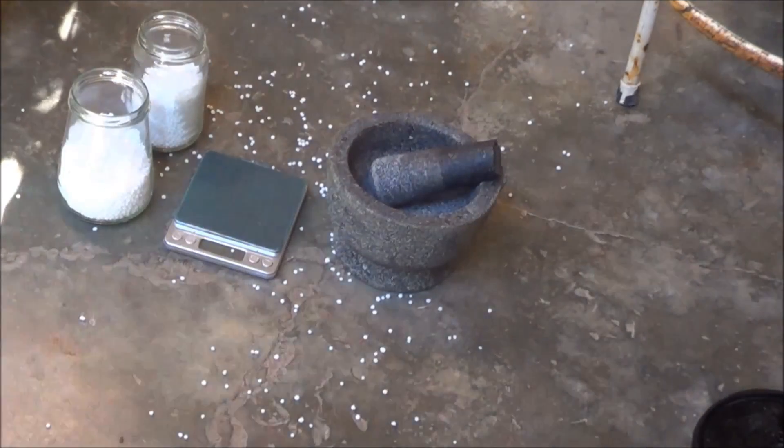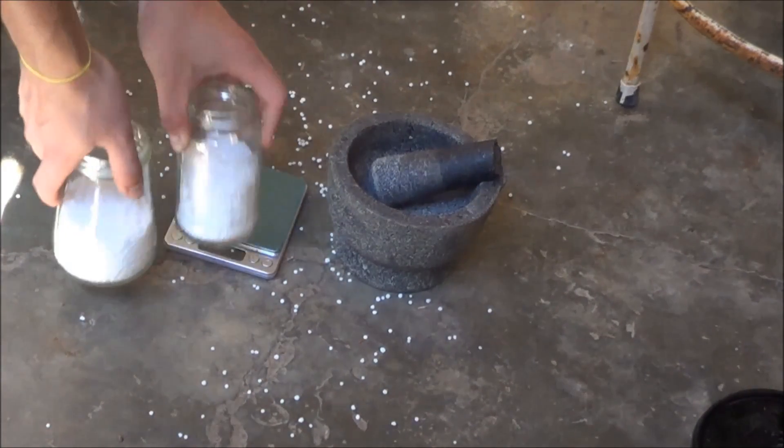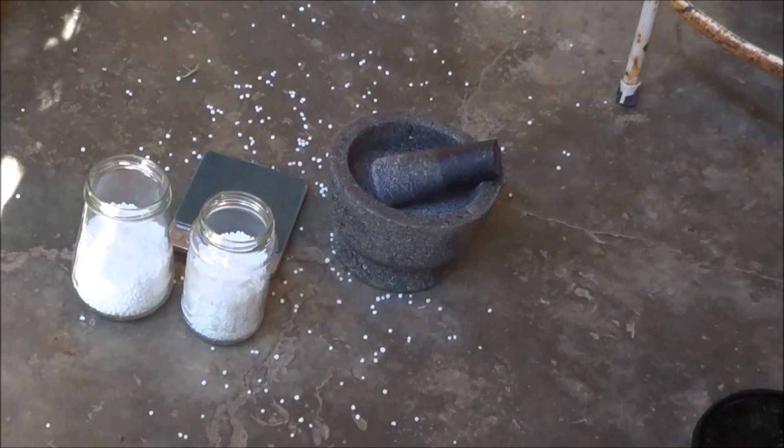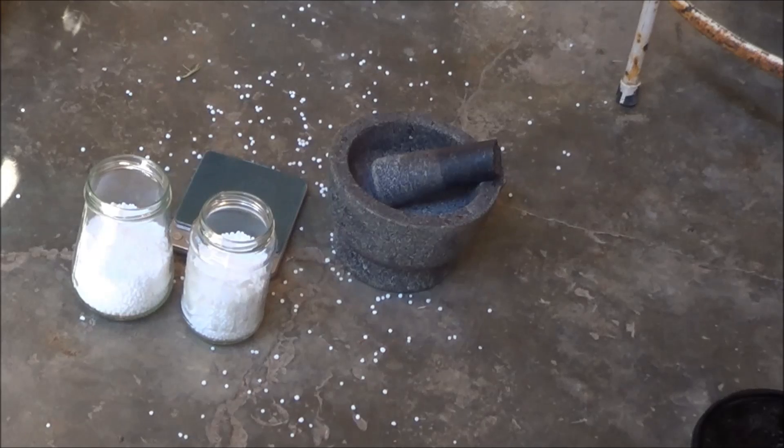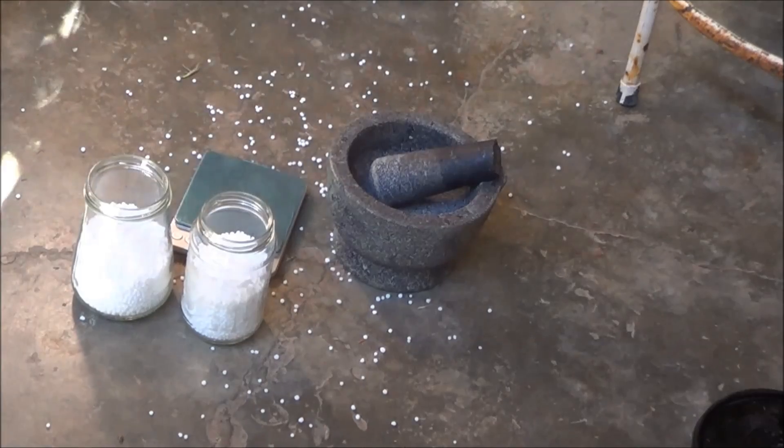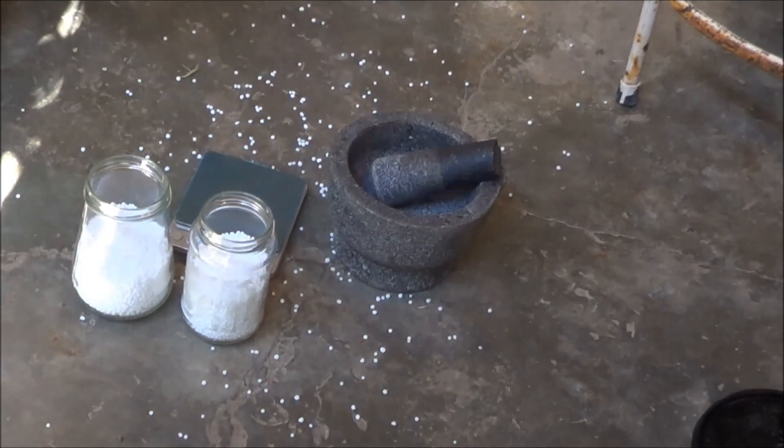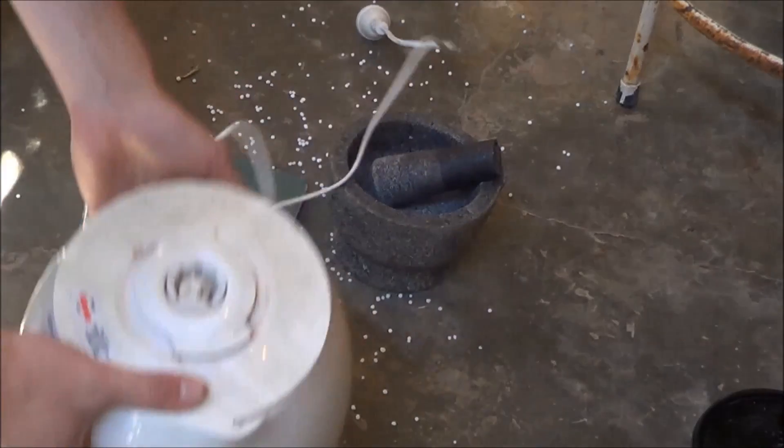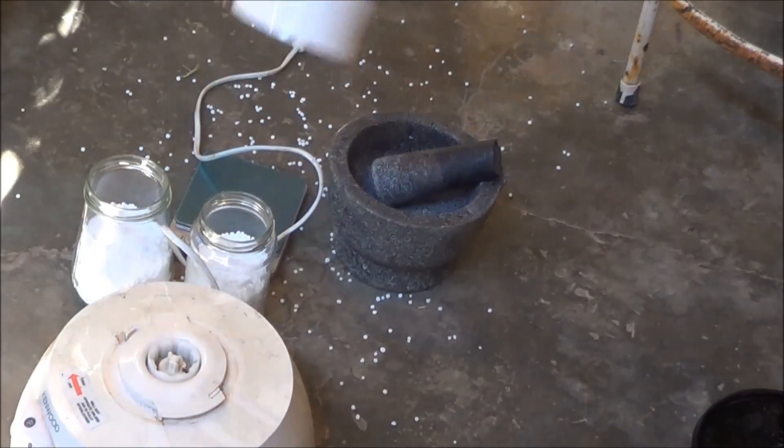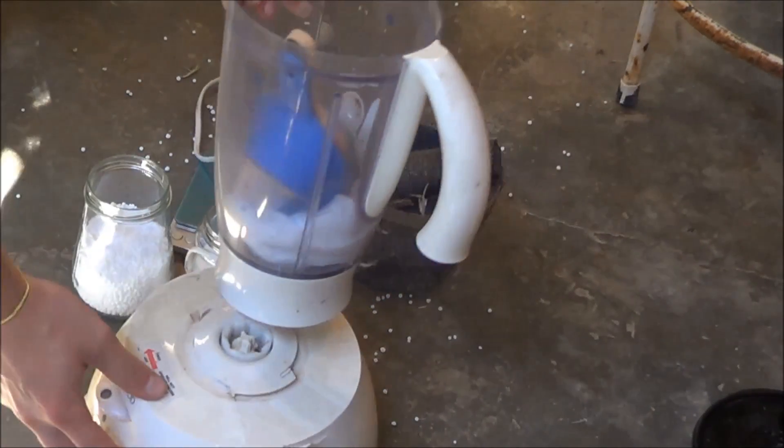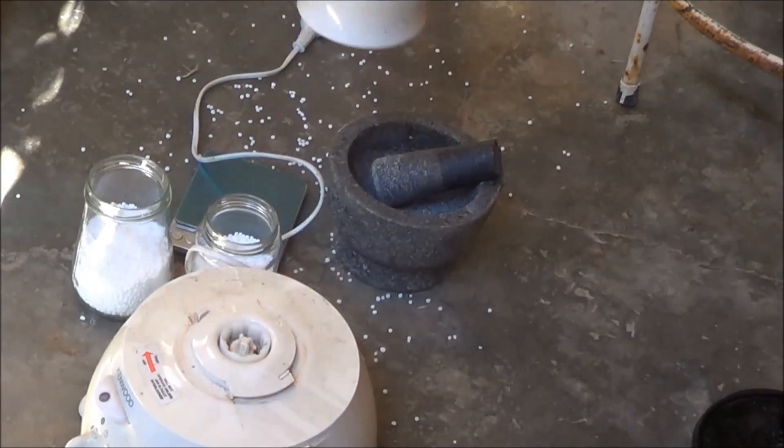Alright, so that is 360g of urea and I didn't spill a single bit of it. I just realised how much grinding I'll have to do. I don't really need to grind it down I guess, it would be better. So instead, I'm going to look around the shed to see if I can find a blender. It took me about 10 seconds and apparently this is a blender. Let's see if this works.